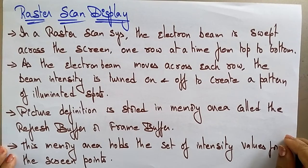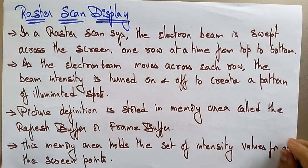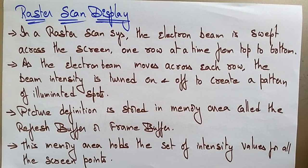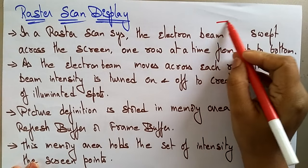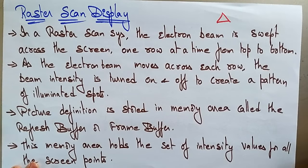Hi students, welcome back. Let's continue with our display devices in computer graphics. In the previous video I explained about CRT and the random scan. Now let's see the raster scan display. In the random scan, the electron beam uses just like a pencil and draws line segments. Now let's see how the image appears on the screen using the raster scan display.